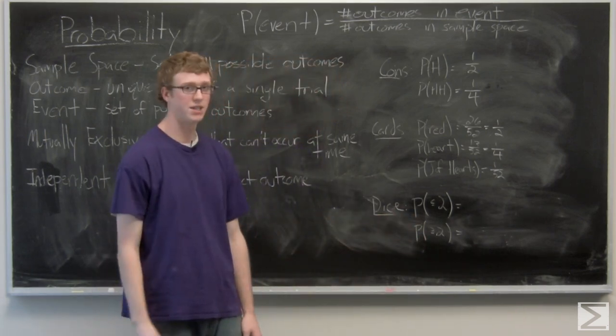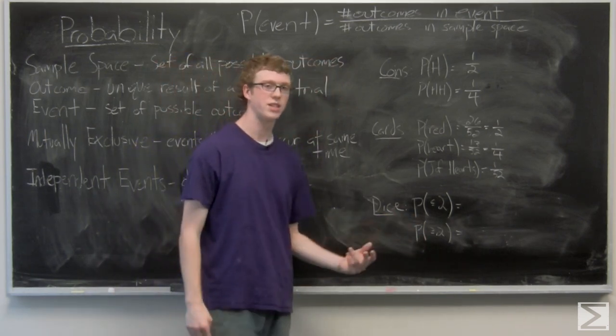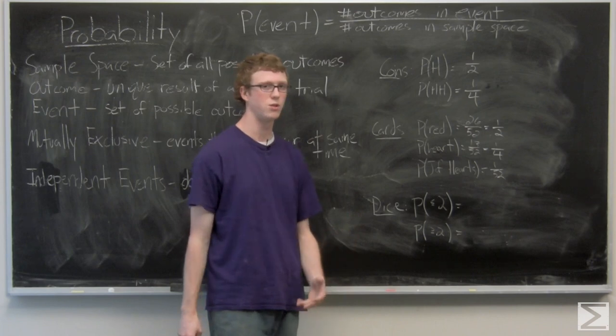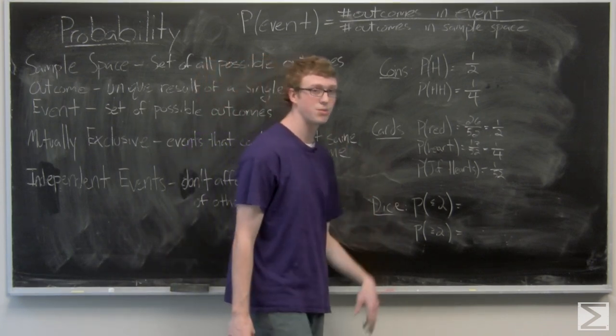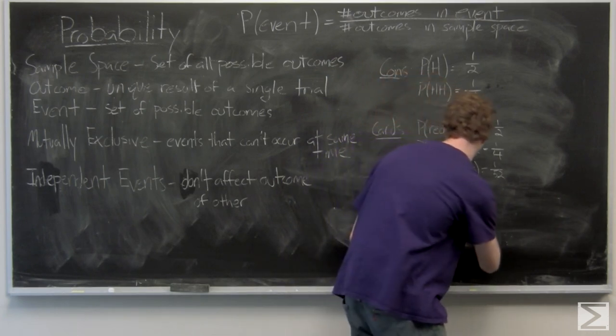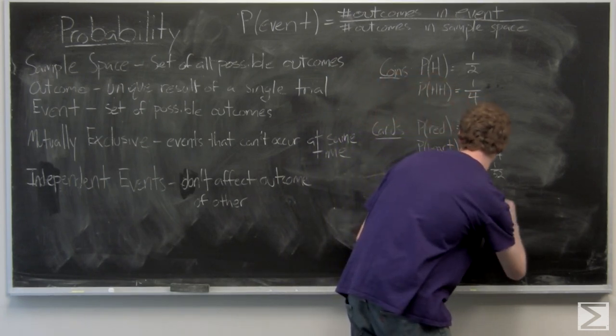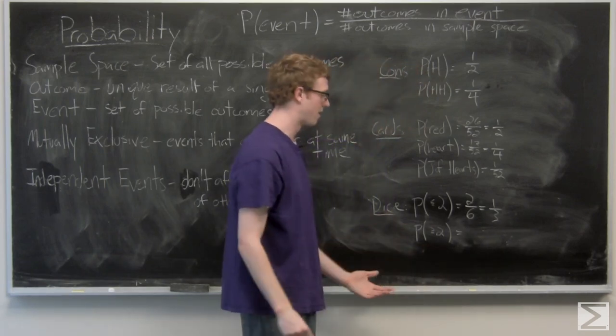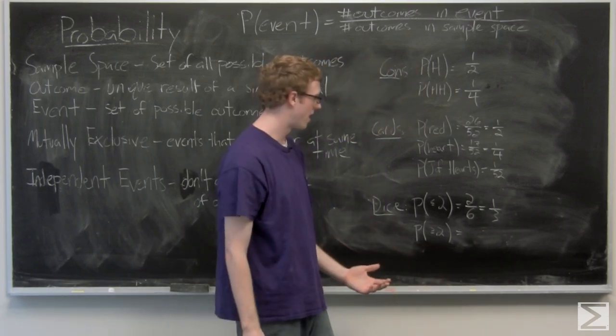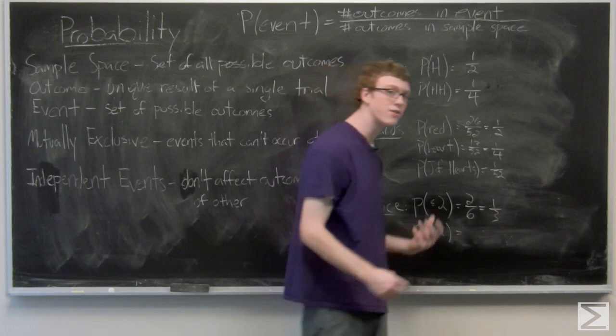Now we take a look at dice, the probability of getting a less than or equal to two. Well, that's a two or a one. There's two outcomes in the event and six outcomes in the sample space, which is two out of six or one third. And then greater than or equal to two. Well, that's anything but one. So there's five outcomes where this is satisfied. So that's five out of six.